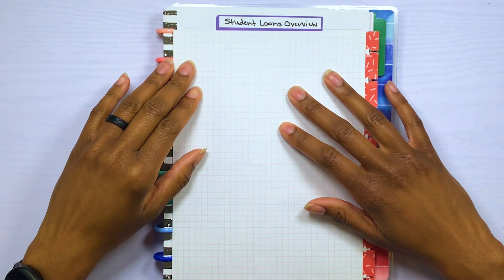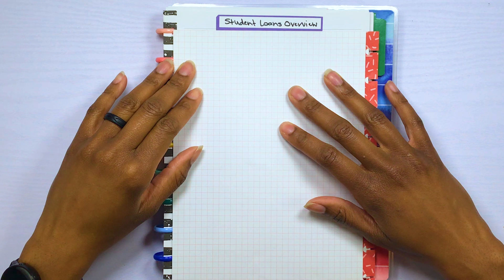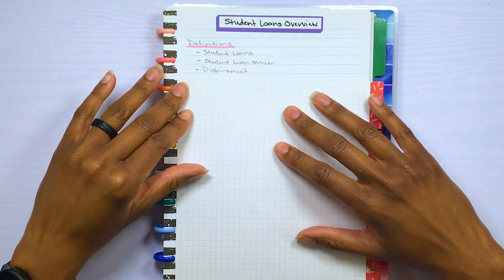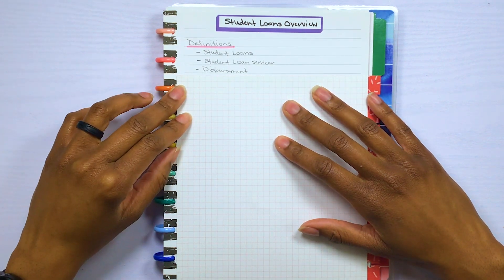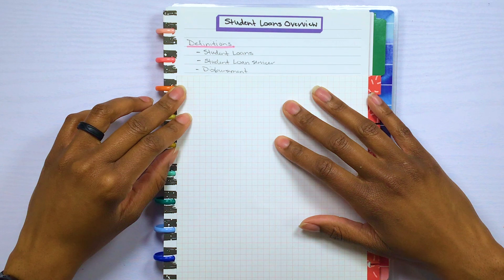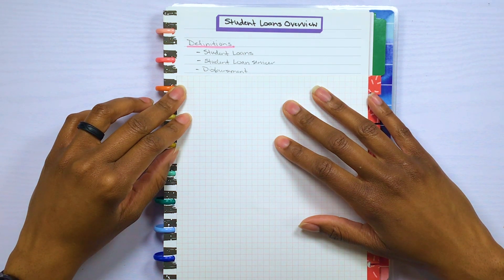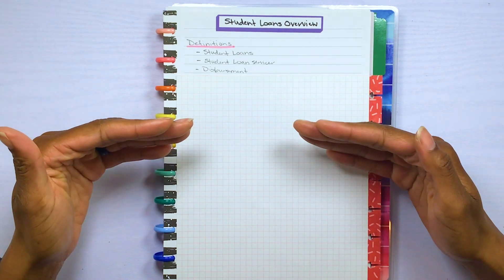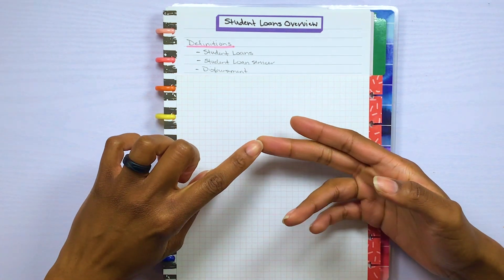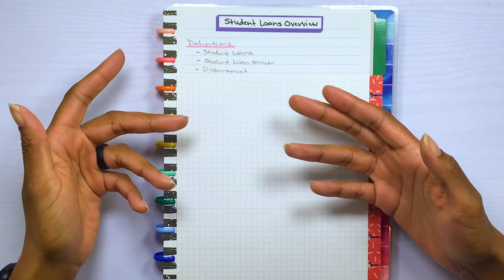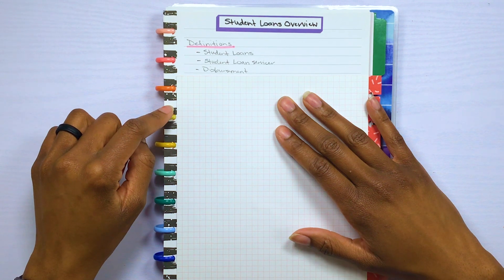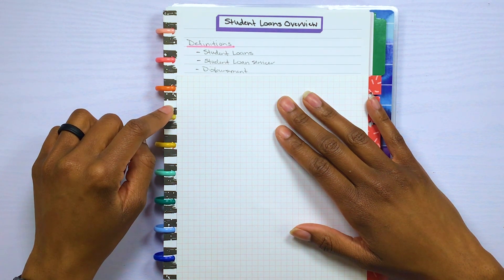Okay, so student loans, what are they? Basically they're loans taken out for you to pay for school, so for tuition, fees, housing, things like that. It would be nice if I would move the paper, wouldn't it? Okay, and then next definition would be your student loan servicer, so that is basically the entity or the company, the website, basically who handles your payment collections, who do you go to for customer service, help with your student loan account.